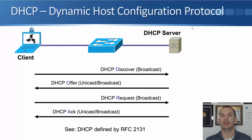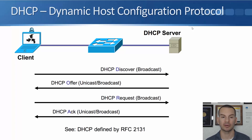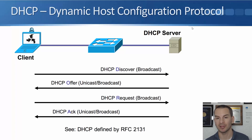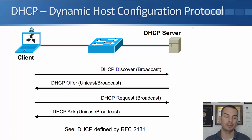How DHCP works: the client sends a DHCP Discover message, which is broadcast traffic. The DHCP server then replies back with a DHCP Offer, but it's not completed yet. The client then replies back with a DHCP Request, and finally the DHCP server sends a DHCP Acknowledgement. At that point, the client will have its IP information, like IP address, etc.